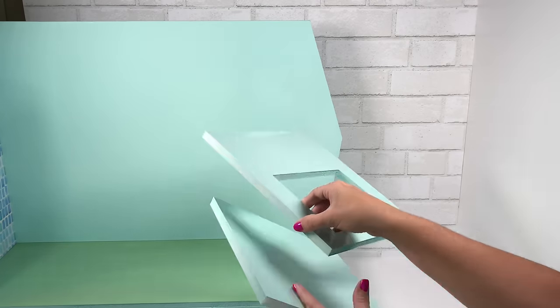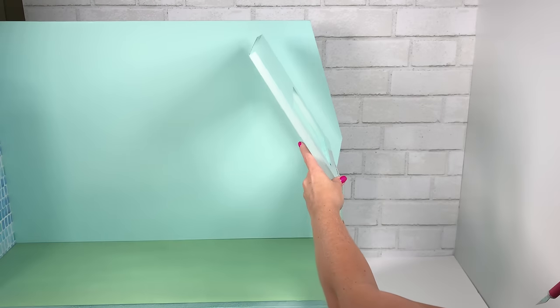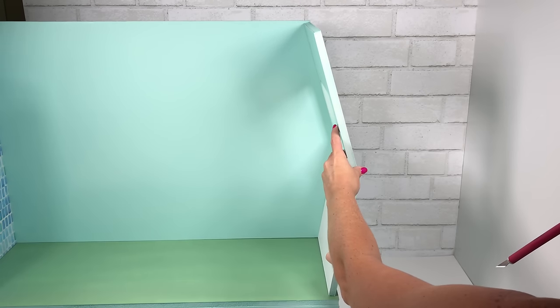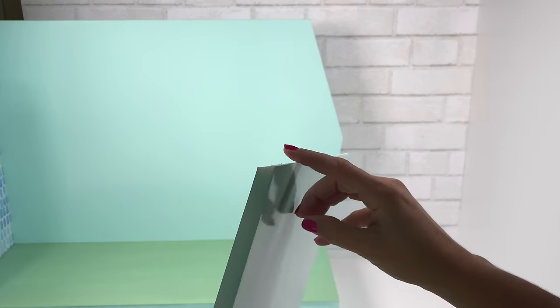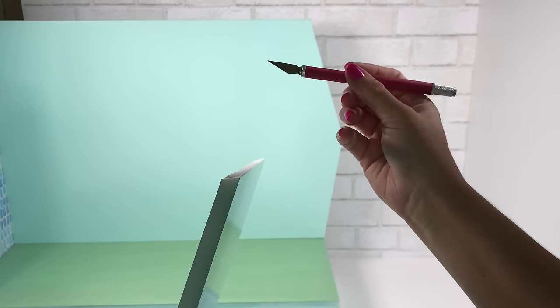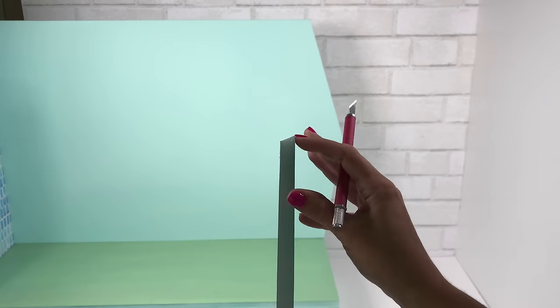These will be glued at an angle and because they meet at a point, you will need to cut an angle on the bottom piece just so they fit together. To do that, take your X-Acto knife and shave off the foam board at an angle. Work slowly so you get a good angle.